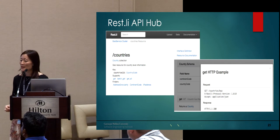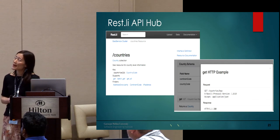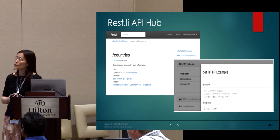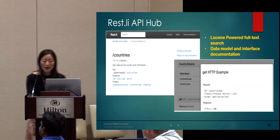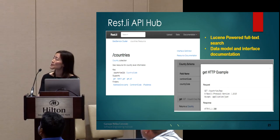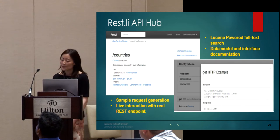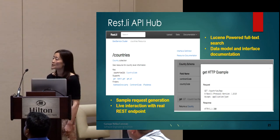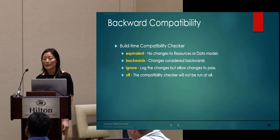To foster collaboration across service communication, an online service catalog becomes indispensable. Rest.li API Hub is a web UI for searching a broad catalog of Rest.li APIs. It provides full-text search with detailed data model and interface documentation, and helps you generate sample requests and interact live with your real Rest.li endpoints.